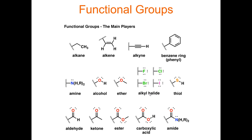Alkyl halides — remember, these are the halogen atoms right next to the noble gases on the periodic table: fluorine, chlorine, bromine, and iodine. We call these alkyl halides.